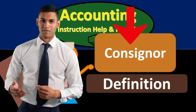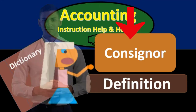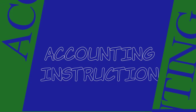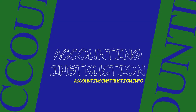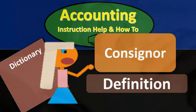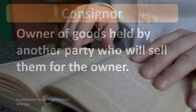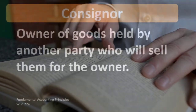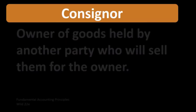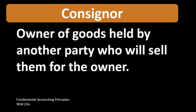Hello, in this lecture we're going to define consignor. According to Fundamental Accounting Principles, Wild 22nd Edition, the definition of consignor is: owner of goods held by another party who will sell them for the owner.